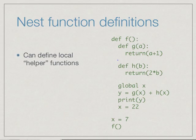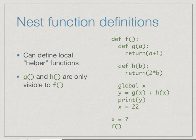While we are on the topic of local scope, Python allows us to define functions within functions. Here for instance, the function f has defined functions g and h. g of a returns a plus 1, h of b returns two times b. Now we can update y, for instance, by calling g of x plus h of x. The point to note is that these functions g and h are only visible to f.